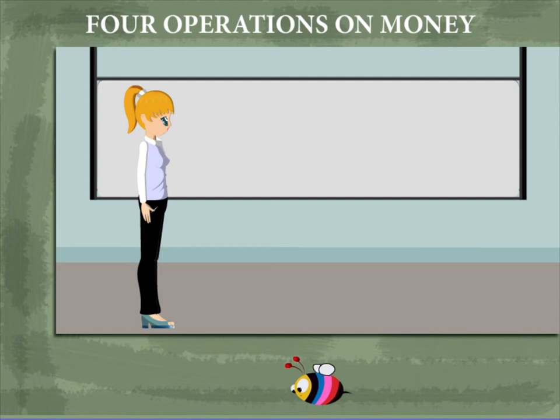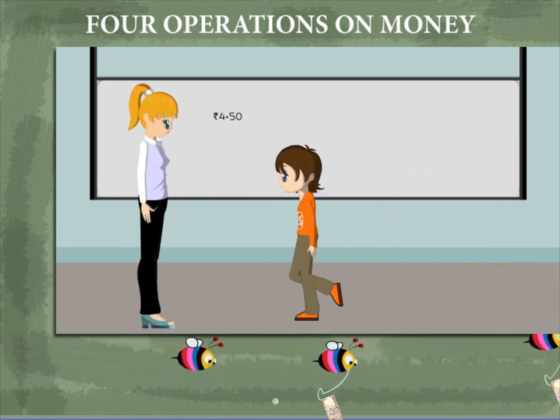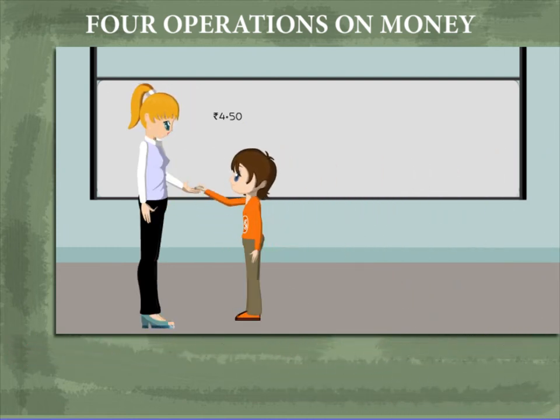Four Operations on Money - Teacher Nancy zips in. She writes 4 rupees 50 paisa. And oh, here comes Mickey with her chalk.